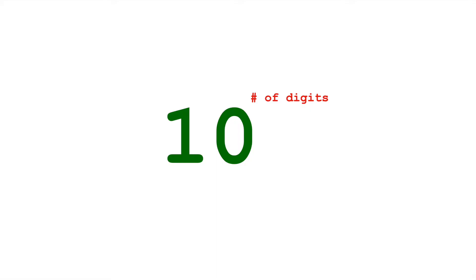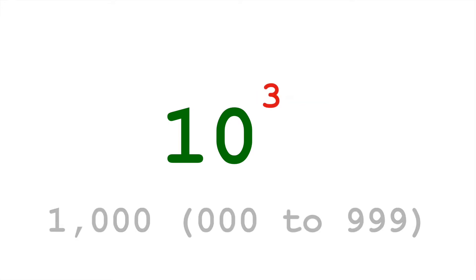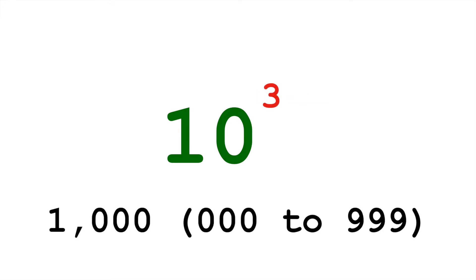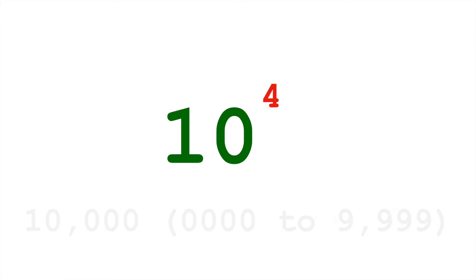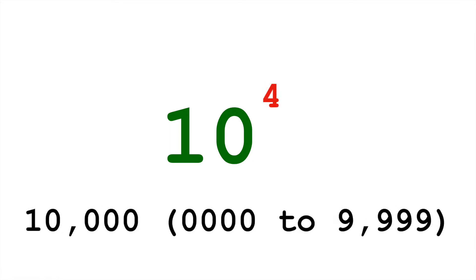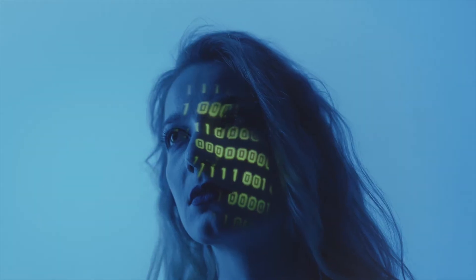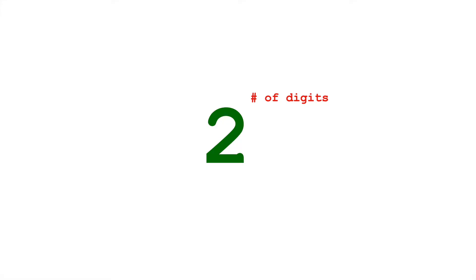As we add more digits the pattern becomes more clear. In our usual base 10 counting, the number of values we can represent is 10 to the power of the number of digits. So with three digits we can represent 10 to the power of 3 — 1,000. With four digits, 10 to the power of 4, and so on. With binary, it's 2 to the number of digits.